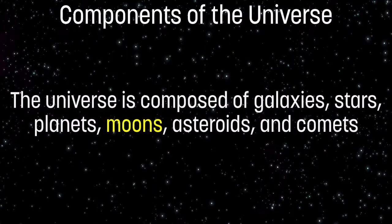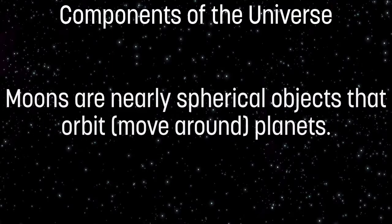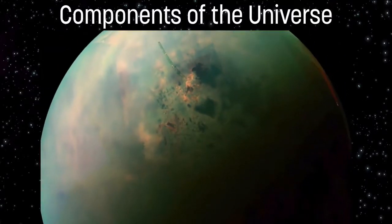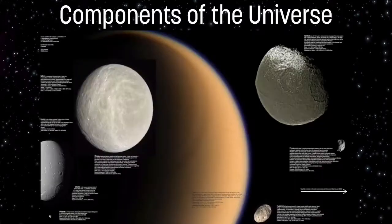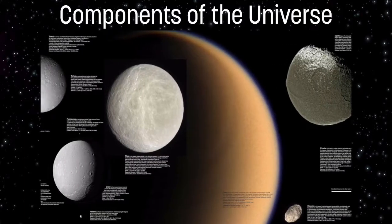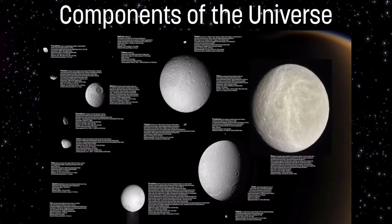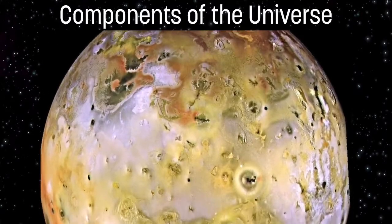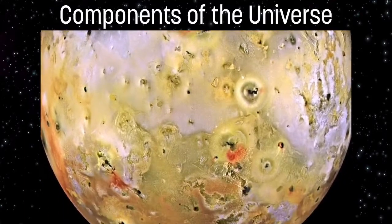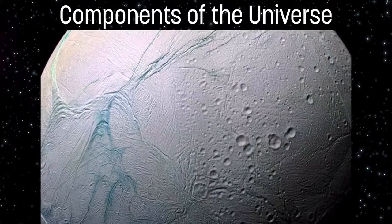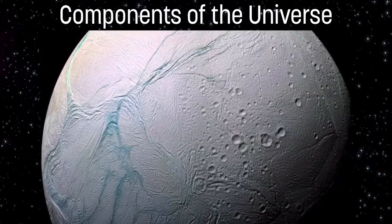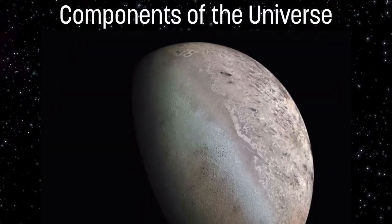Our next component are moons. Moons are also nearly spherical objects that orbit around planets. A moon is a body that orbits a planet or an asteroid as those objects are orbiting the sun. In our solar system, there are approximately 175 known moons, which vary in size from larger than the smallest planets to only a few kilometers in diameter. As we learn more about our solar system, we plan to visit different moons of distant planets.